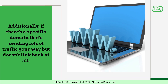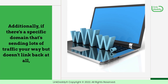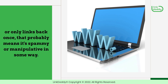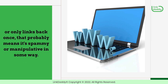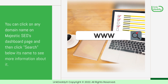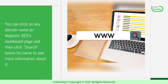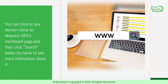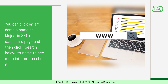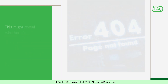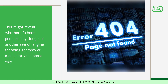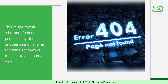Additionally, if there's a specific domain that's sending lots of traffic your way but doesn't link back at all, or only links back once, that probably means it's spammy or manipulative in some way. You can click on any domain name on Majestic SEO's dashboard page and then click below its name to see more information about it. This might reveal whether it's been penalized by Google or another search engine for being spammy or manipulative.